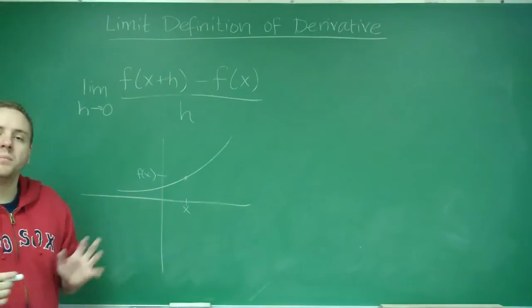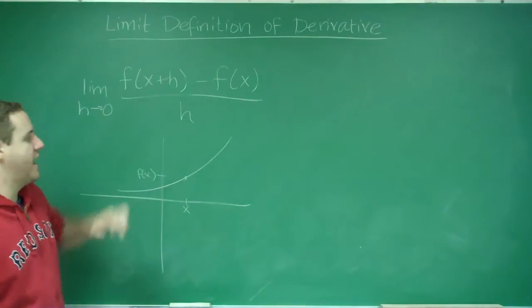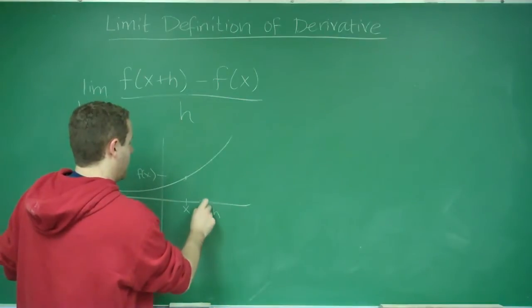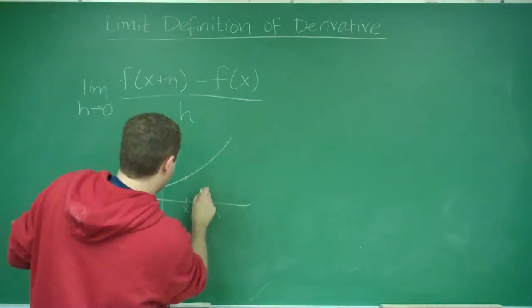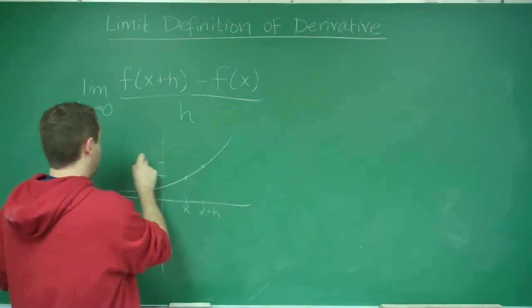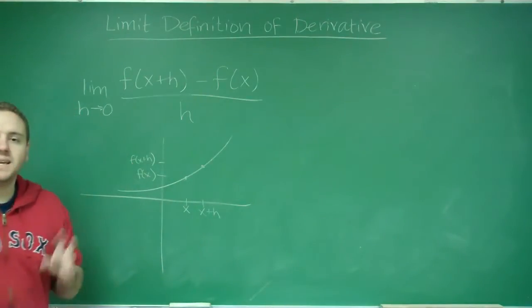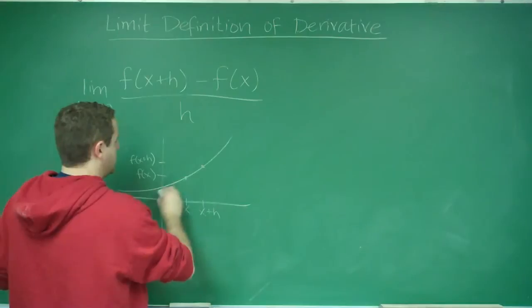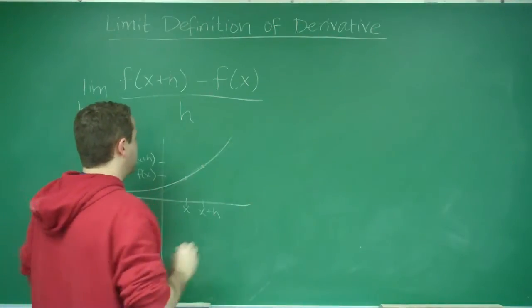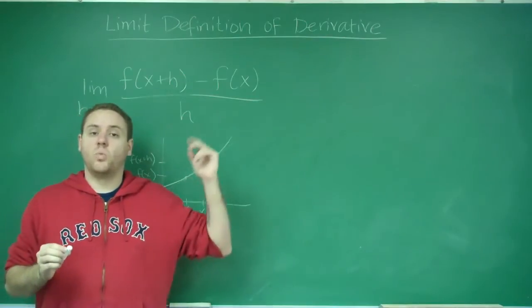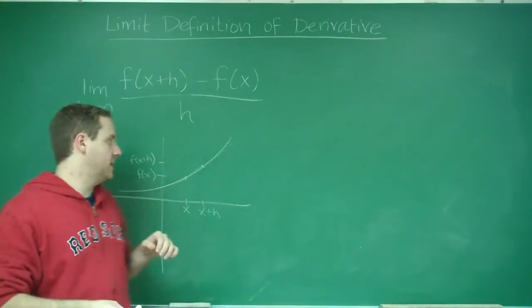What we do is we pick a number a little bit to the right of that, in fact h to the right of that, and up here we get f of x plus h. And we just take the slope between these two points. Now finding the slope between two points is very simple. In fact, that's exactly what this is doing: y2 minus y1 over x2 minus x1.